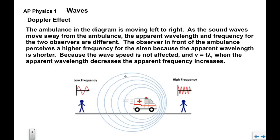Because the wave speed is not affected and V equals F times lambda, when the apparent wavelength decreases, the apparent frequency must increase. Since V is still the speed of sound, when the apparent wavelength decreases as it does for this observer in front where the ambulance is approaching, the apparent frequency heard by this person is higher than the actual siren's frequency.